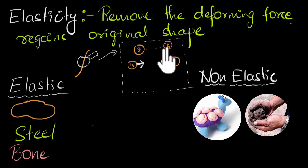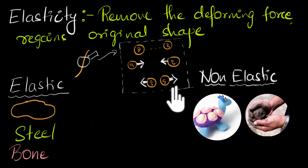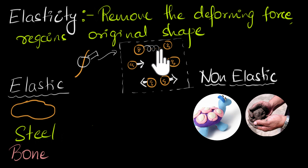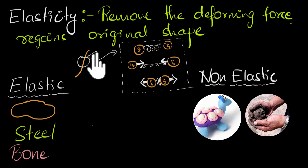Similarly, if you were to compress the rubber band — push these atoms close to each other — they don't like that either, and they start pushing each other away. Because of this kind of force, the rubber band always tries to come back to its original shape. It's as if the atoms are being tied by a spring. When you stretch a spring it comes back, and when you compress it, it snaps back. So we can visualize that the atoms of the rubber band are all connected by springs — and that's why when you stretch or compress it, it tends to snap back to its original shape. Same is the case with steel and bone.